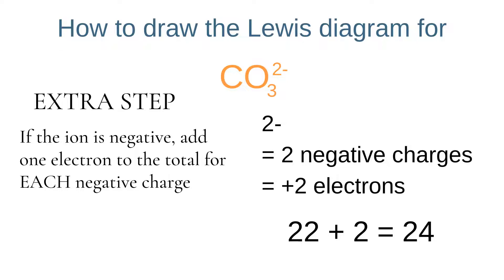After this we have an extra step. We need to account for the electrons that have either been gained or lost in the process of becoming an ion. Because we have a two minus charge on the carbonate ion, that means two extra electrons have been gained, so we need to add this to the total. 22 plus 2 means that we have 24 electrons in the polyatomic ion.